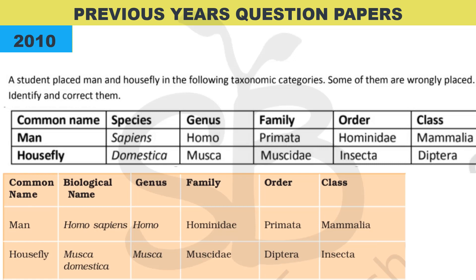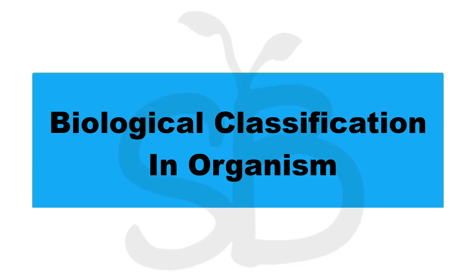So we have discussed a lot of questions from this chapter — Chapter 1 of the Living World. This chapter mostly has one-word questions. Prepare this chapter well. The next chapter we will discuss is Biological Classification. Click on the link to the next chapter on Biological Classification provided in the description.